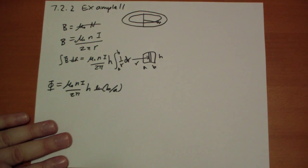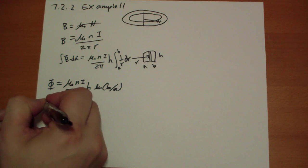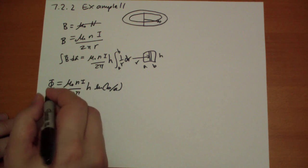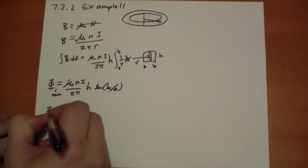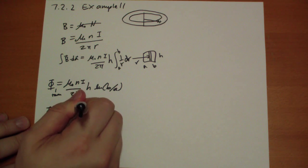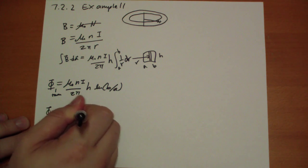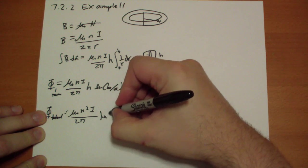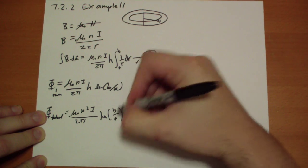Alright, the total flux is n times this, so we get an n squared. So the total flux, this is flux for one turn. So total flux is n times that, equals mu naught n squared, because there's n turns, over i, 2 pi, my camera stand is getting in the way, b over a.